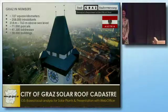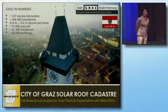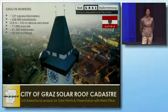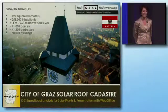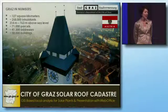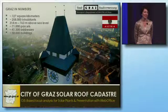I would like to tell you about the solar roof cadastre of the city of Graz, which was a project realized by the surveying department last year. Graz is the second largest city of Austria, a small country in the heart of Europe, with about 260,000 inhabitants and about 60,000 buildings.